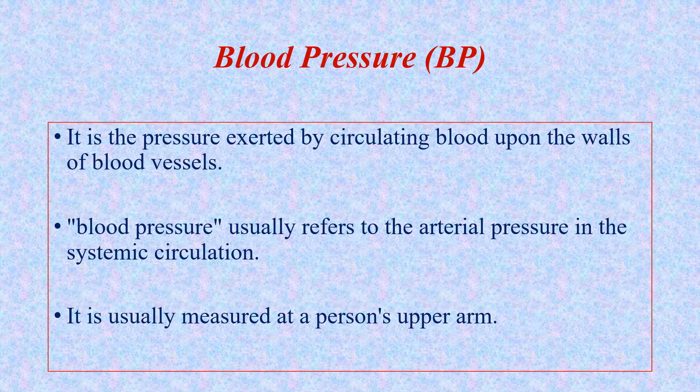Regarding the first objective — the definition of blood pressure — it is the pressure exerted by circulating blood upon the wall of blood vessels. This usually refers to the arterial pressure in the systemic circulation, and we know that blood pressure is measured in the upper limb of the patient.